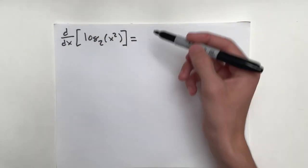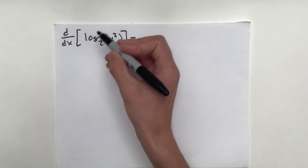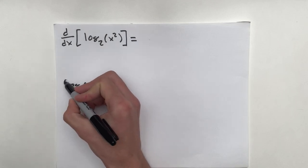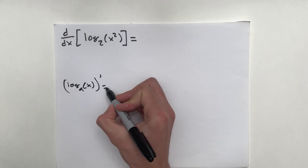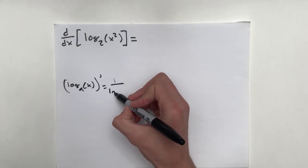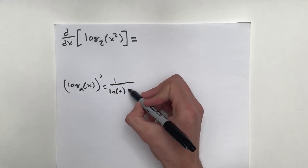So today I'm going to show you how to do that with something that's not base e. So the general rule is log base a of x. That derivative is going to equal 1 over the natural log of a, the base, times x.